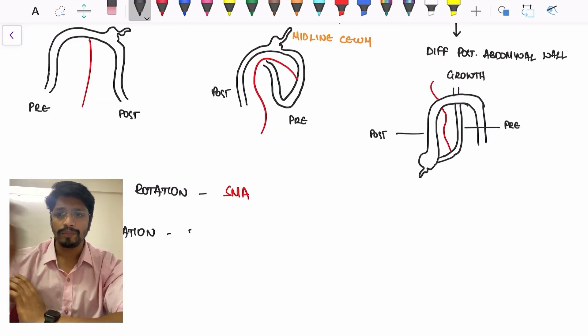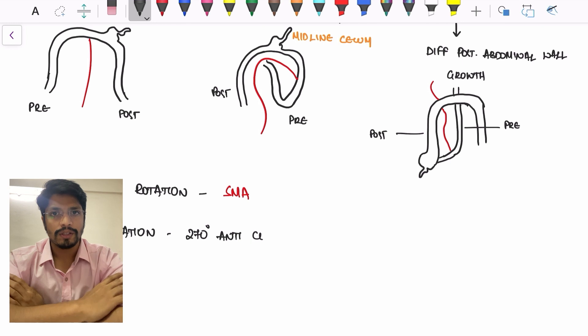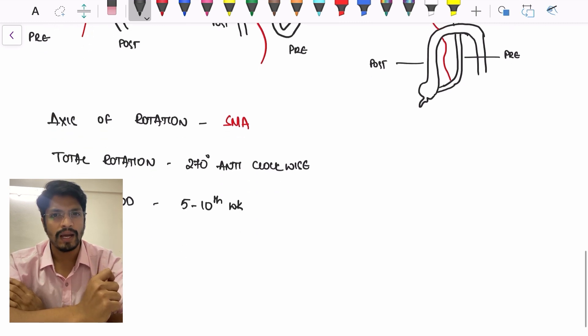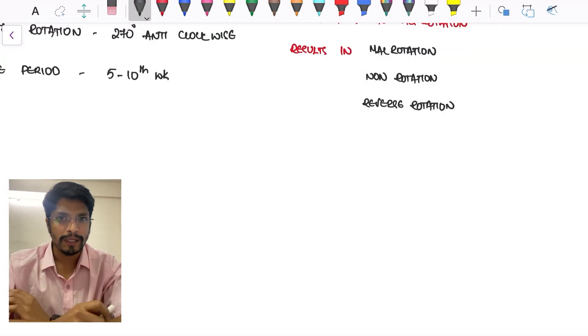To summarize the entire mid-gut rotation, we need to know what is the axis of rotation. The rotational axis is based on the superior mesenteric artery, and the total rotation is 270 degrees anticlockwise. Except for the last third phase, first two will be vertical axis and the last will be horizontal axis. The total time period will be 5th to 10th week. This is regarding mid-gut rotation.